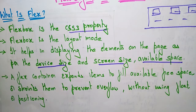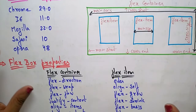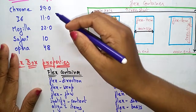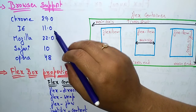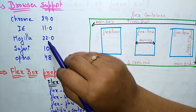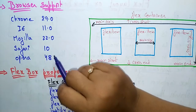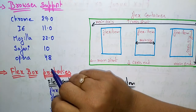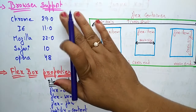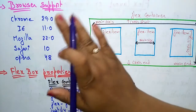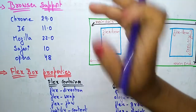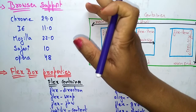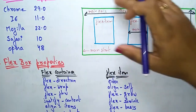Let's see the browser support for flexbox. Flexbox is supported in Chrome 29.0, Internet Explorer 11.0, Mozilla 22.0, Safari 10, and Opera 48. If your browser has these versions or above, the flexbox property will work on your browser.